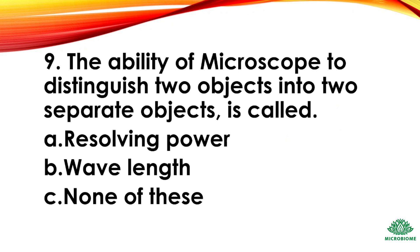Question 9: The ability of a microscope to distinguish two objects as two separate objects is called — options: resolving power, wavelength, none of these. The right answer: option A, resolving power.